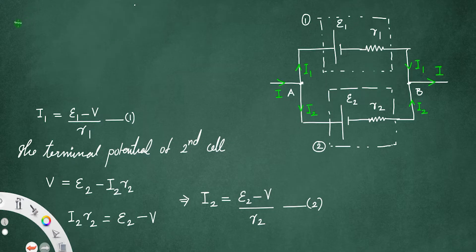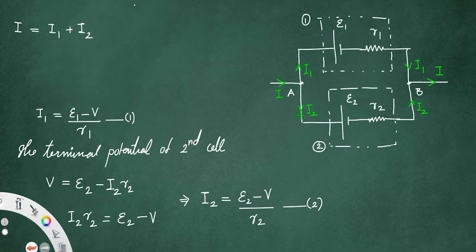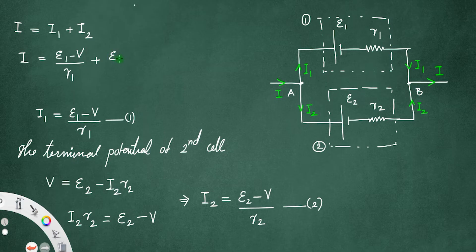The total current I can be found using Kirchhoff's junction rule at junction A: I = I1 + I2. The current I splits into I1 and I2, and the sum of these two currents gives back I. So I = (E1 − V)/R1 + (E2 − V)/R2.